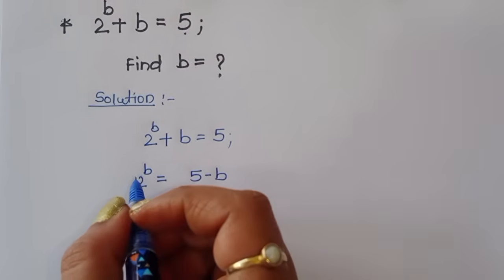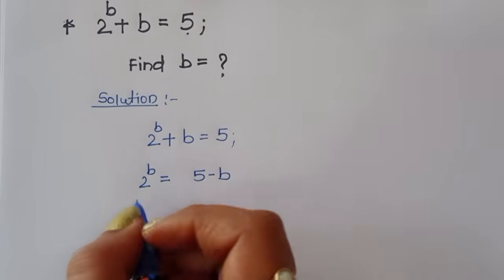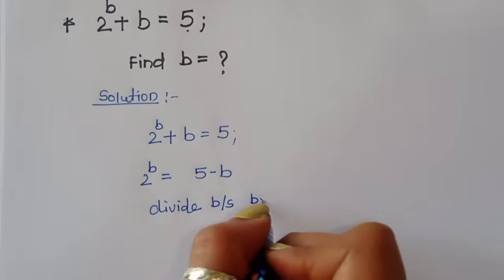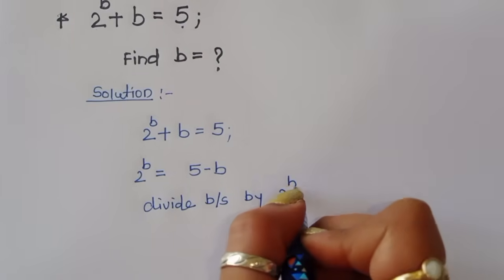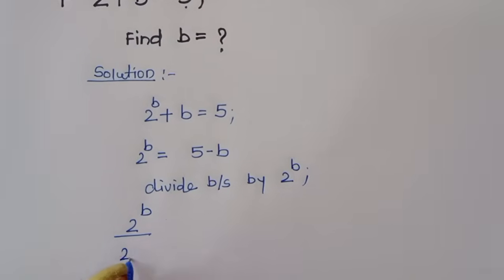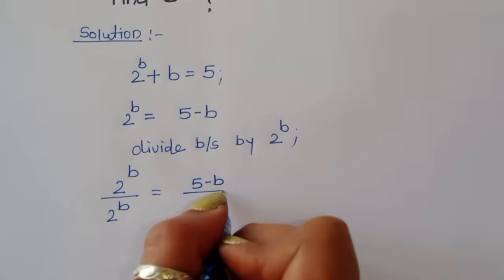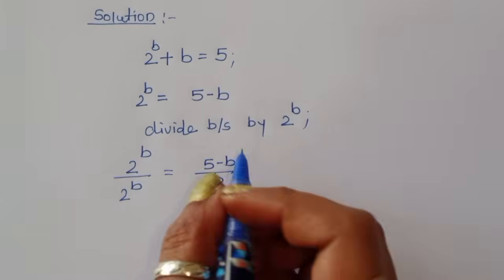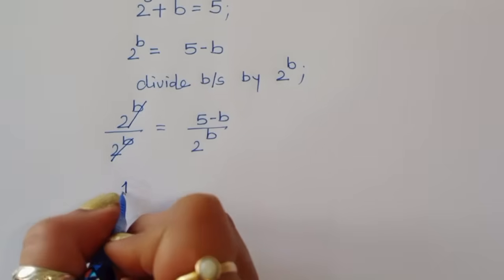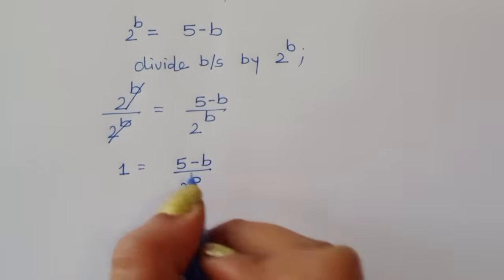We have to remove this 2 power b, so we can divide both sides by 2 power b. Then we will get 2 power b divided by 2 power b is equal to 5 minus b divided by 2 power b. The 2 power b terms cancel, so it becomes 1 is equal to 5 minus b divided by 2 power b.